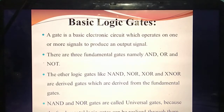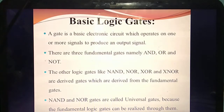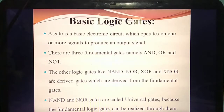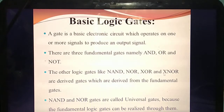Apart from these three fundamental gates, by combining AND, OR, and NOT you create new gates called derived gates. Derived means derived from the fundamental gates. The derived gates are: NAND, NOR, XOR, and XNOR. Sometimes in exams they will give a lot of gates and ask you to identify which ones are the derived gates.